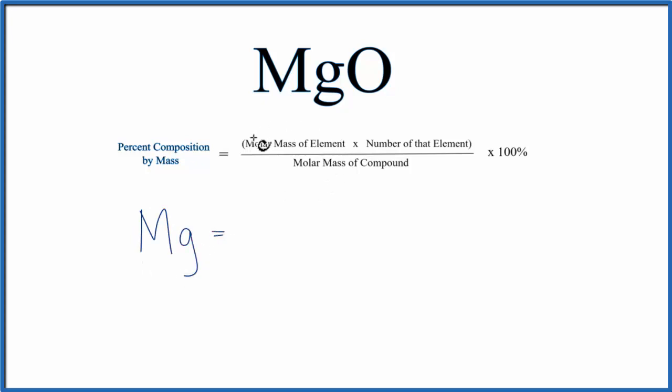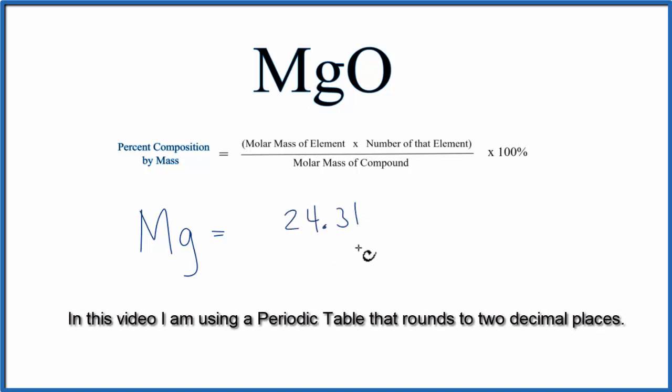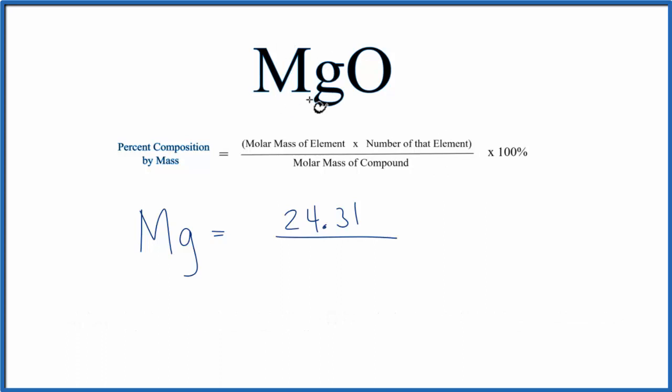For magnesium, we look at the molar mass of the element, so we go to the periodic table. Magnesium is 24.31 grams per mole. I won't write those because we'll have them on the top and bottom, they'll cancel out. And we see that we only have one Mg here, so we don't need to do anything with that.